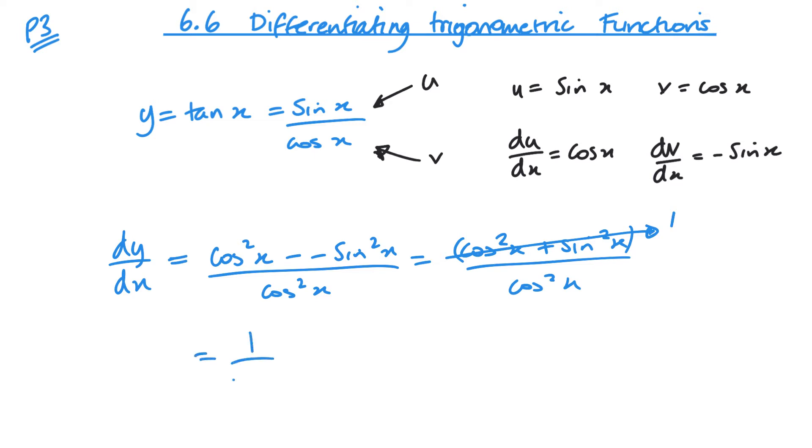So we're left with 1 over cos squared x. And 1 over cos is sec. So 1 over cos squared is sec squared x. So now I can state that if I differentiate tan x, I get sec squared x. And I can use something similar to be able to differentiate cosec, sec, and cot. See if you can differentiate cosec, sec, and cot.